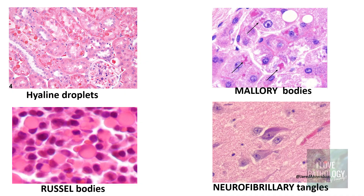So, to summarize the four protein accumulations we studied: hyaline droplets, Russell bodies, Mallory bodies, and neurofibrillary tangles. Those were the key examples of intracellular accumulation of proteins.